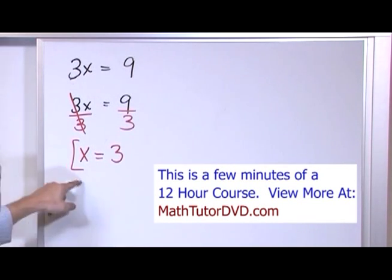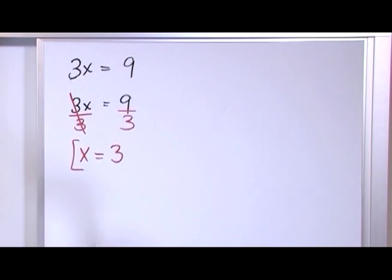And you can check it by putting x back in here, 3 times 3 is 9. So you really just need to look and do the opposite of whatever it is you're trying, whatever stands in your way, so to speak.